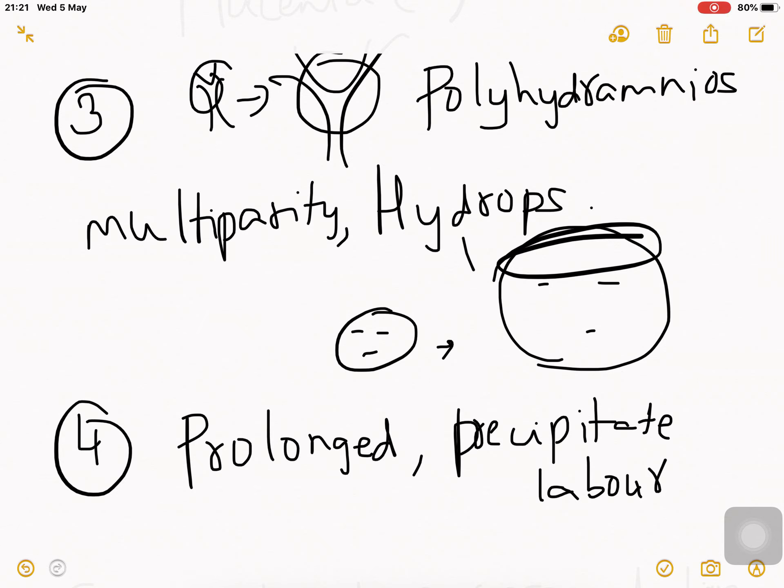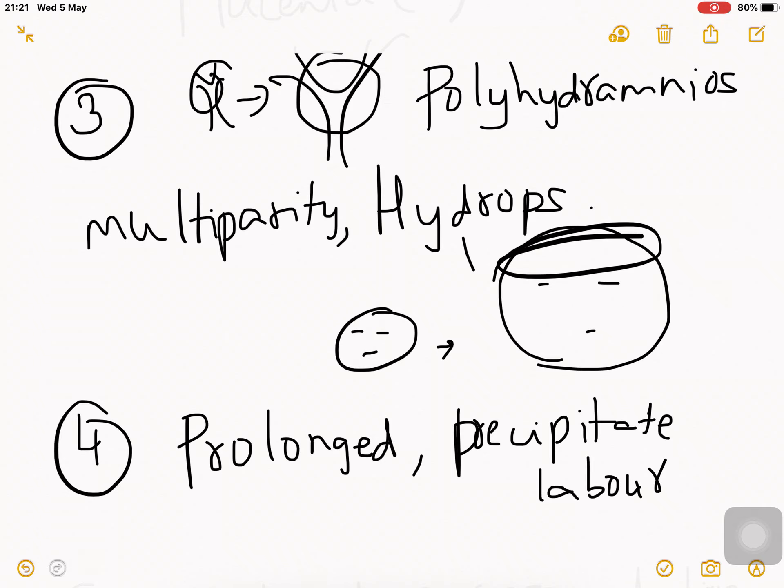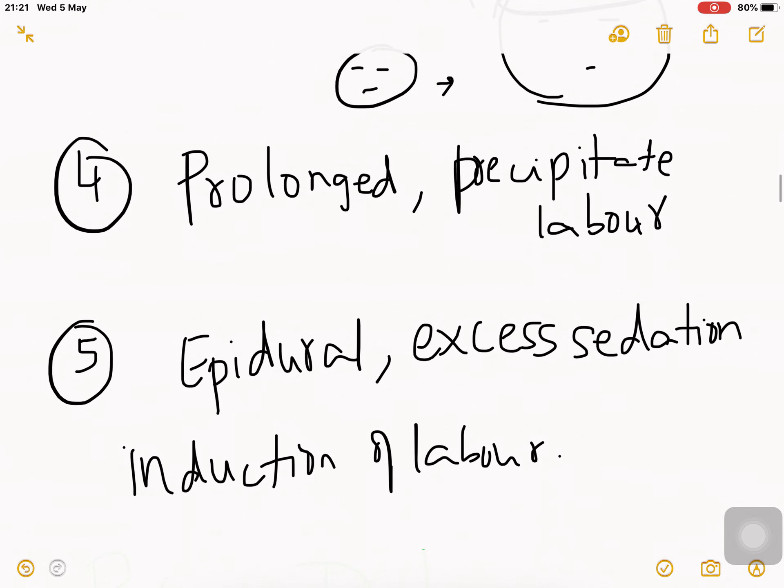Prolonged labor or precipitate labor can produce PPH. The cutoff is three to 24 hours - if it's more than 24 hours it's prolonged labor. If the labor duration is less than three hours or less than six hours, it's precipitate labor. It can also be from epidural analgesia, excessive sedation, or induction of labor when the drugs cause postpartum hemorrhage as a side effect.